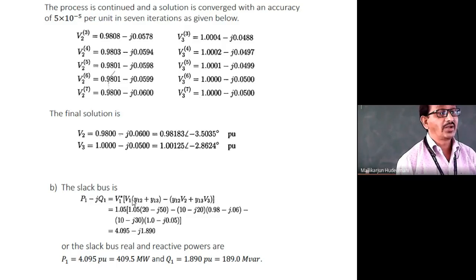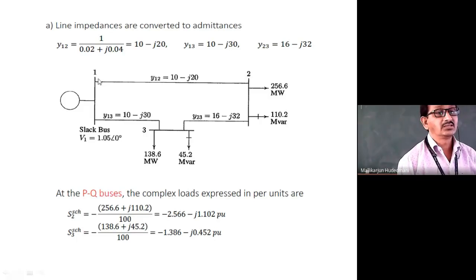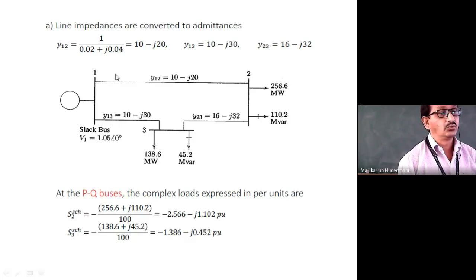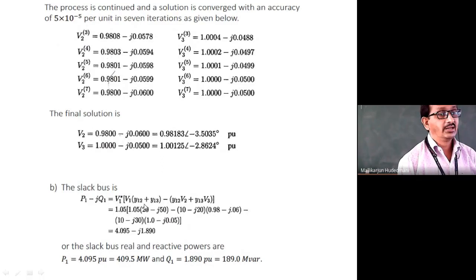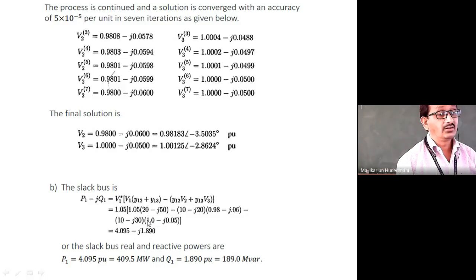The current at bus 1, I1, is I12 + I13, where I12 = (V1 − V2)·Y12 and I13 = (V1 − V3)·Y13. These are the currents flowing along each transmission line. In the expression, the square bracket contains current moving toward bus 2 and current moving toward bus 3, multiplied by V1*. The real term represents active power delivered by the slack bus; the j-operated term represents reactive power. The result is 409.5 MW injected by the slack bus.